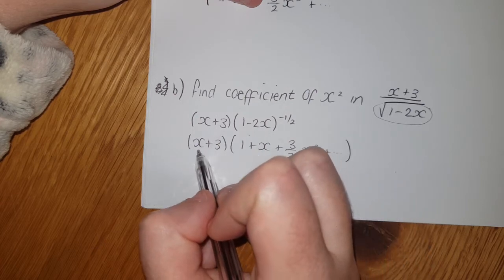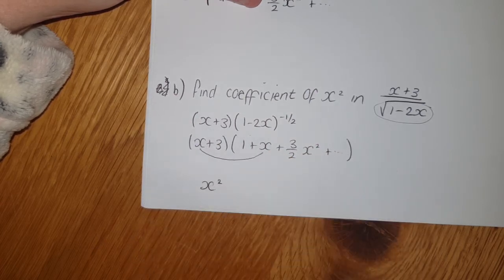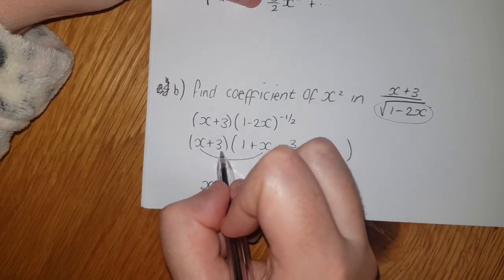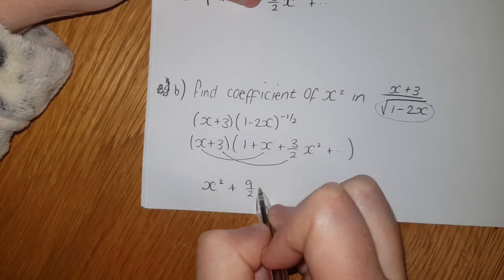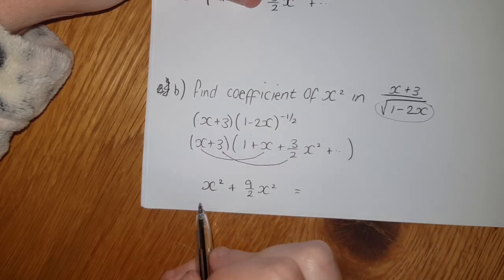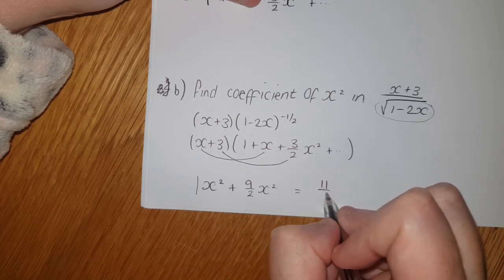So that's just x², and then if I multiply the number by the x² term, so that's 9/2 x². That means if I've got 1 + 9/2, that's going to give me 11/2 x².